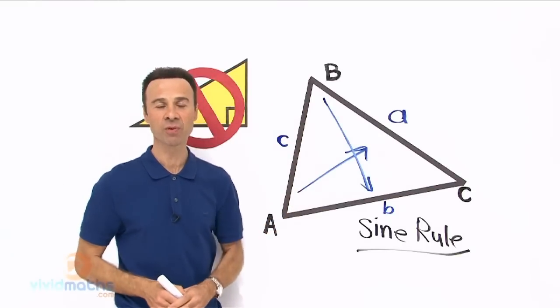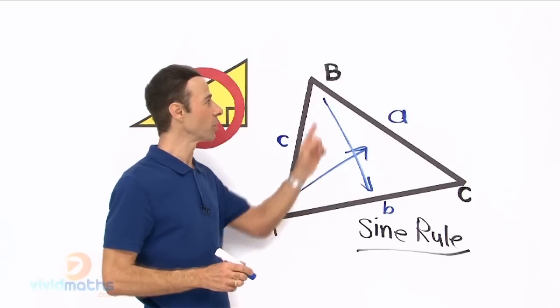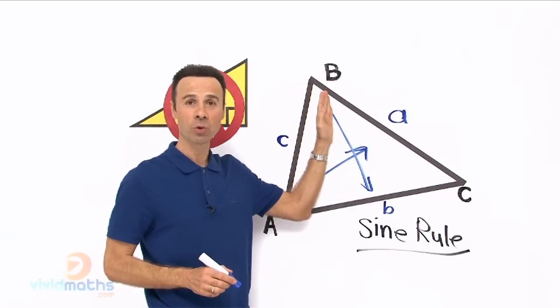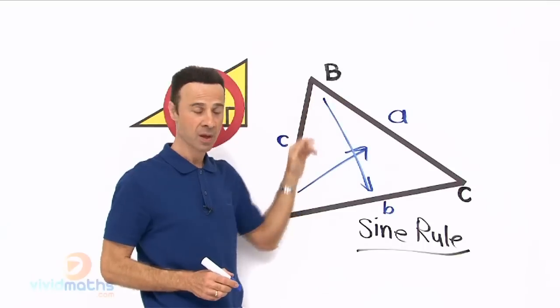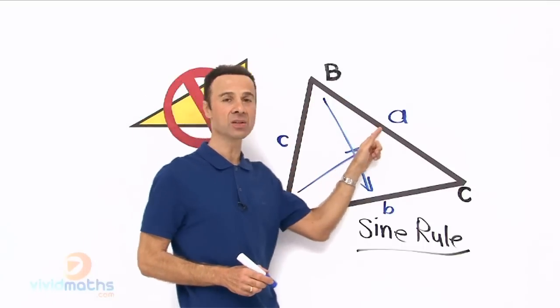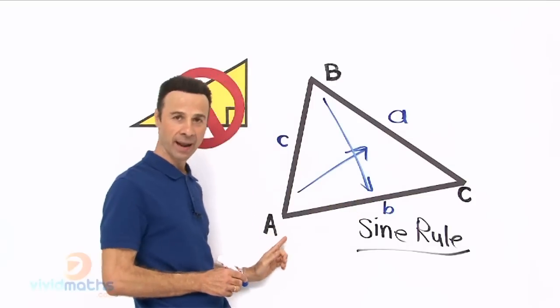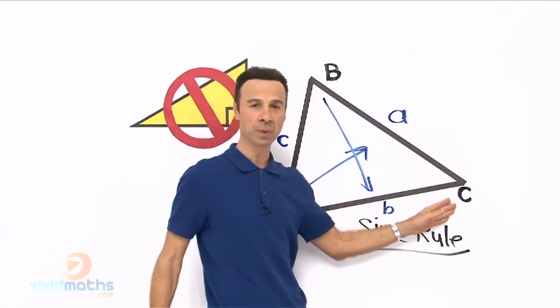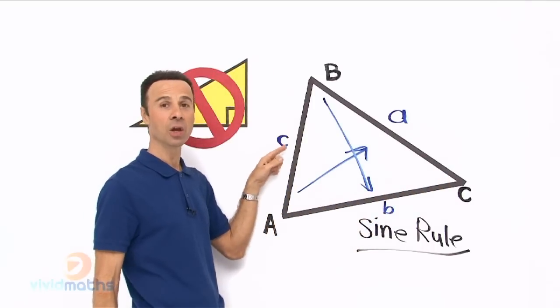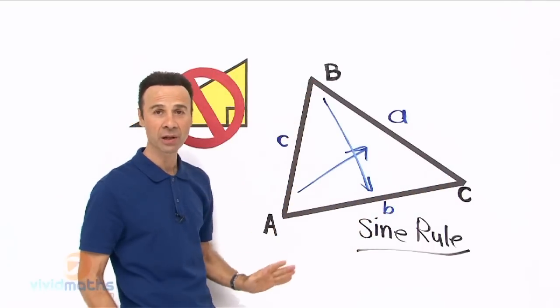So let us just rehash and revisit what I just said. Capital letters represent the vertices and that capital letter also represents the angle at that vertices or corner. Similarly capital A is the angle here and little a is the length opposite that angle A. And over here big C is the angle right there at that vertices and opposite that is the little c which represents the side or the length.